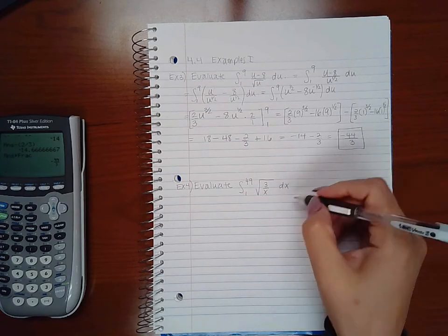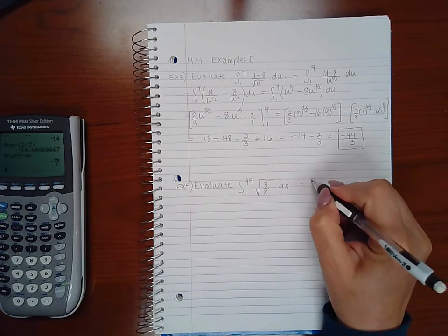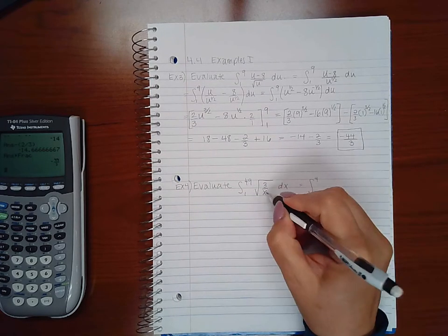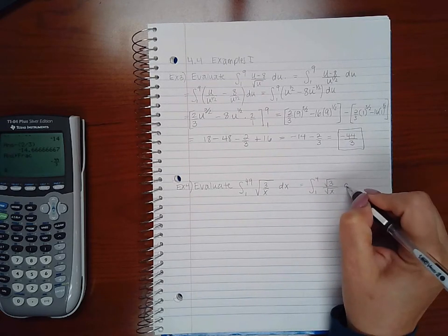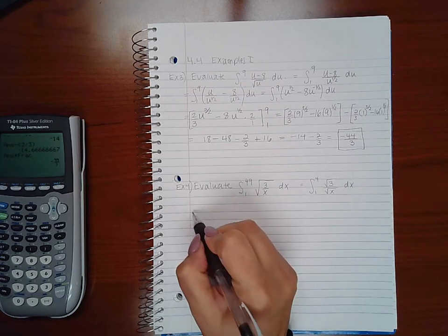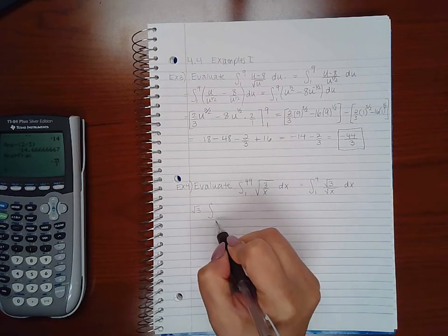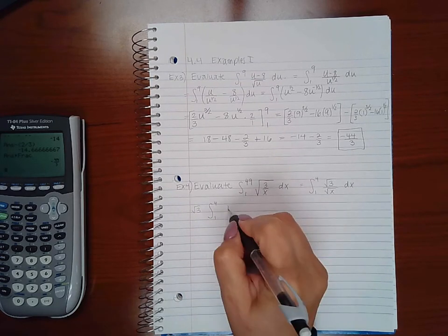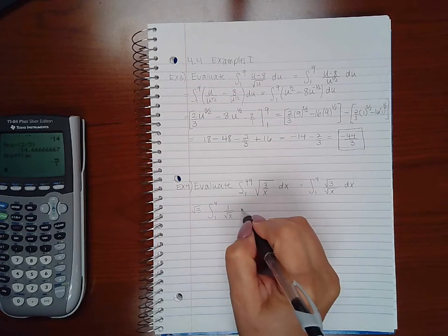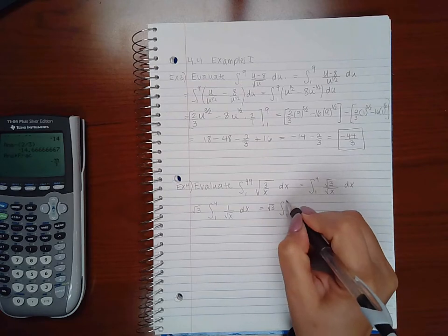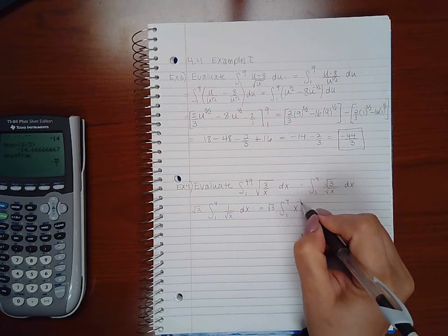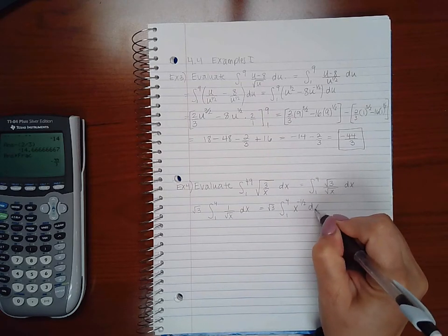But let's go ahead and move on to example 4. So first thing I'm going to do is take the square root of each, the numerator and the denominator. Now the number, I can just take it out. It's just the coefficient. But the variable I can rewrite as an exponent form. So it would be x to the negative 1 half because it was in the denominator.